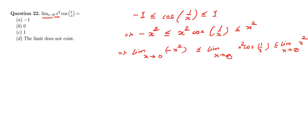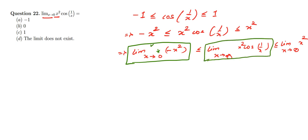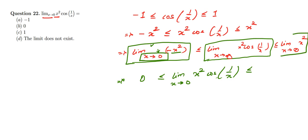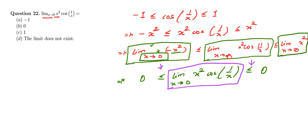Since we are applying the limit only to the bounding expressions and not to the main equation directly, we can substitute x = 0 into −x² and x². This gives us 0 ≤ limit x→0 of x²·cos(1/x) ≤ 0. A value that is both greater than or equal to 0 and less than or equal to 0 must equal 0. Hence, by the squeeze theorem, the limit is 0.